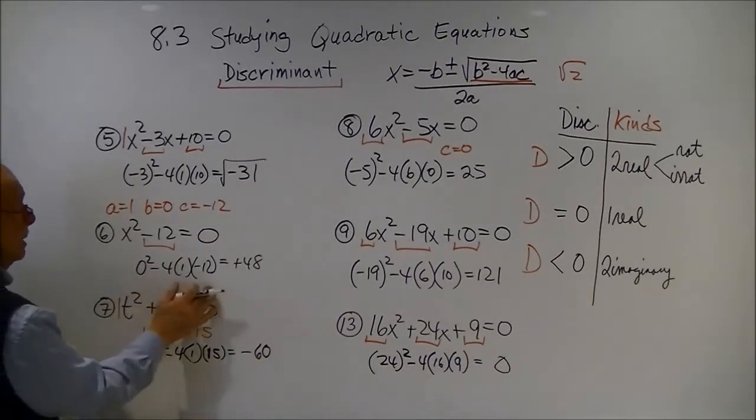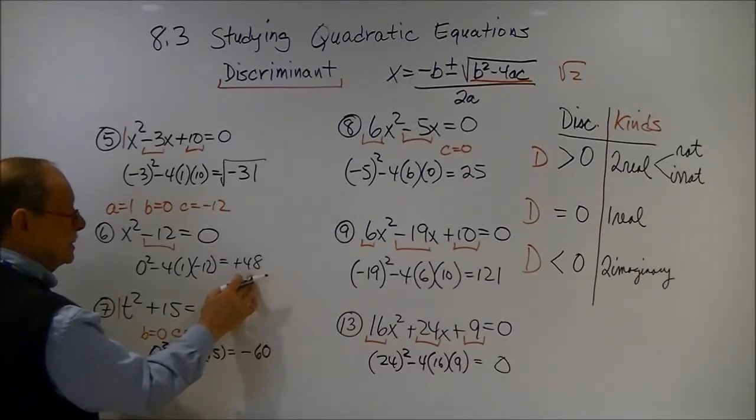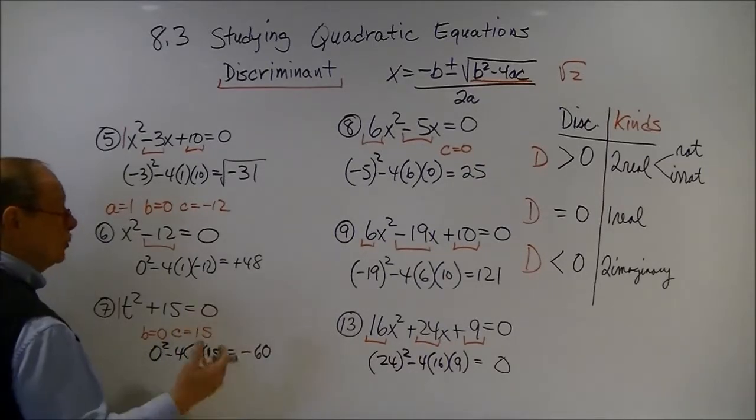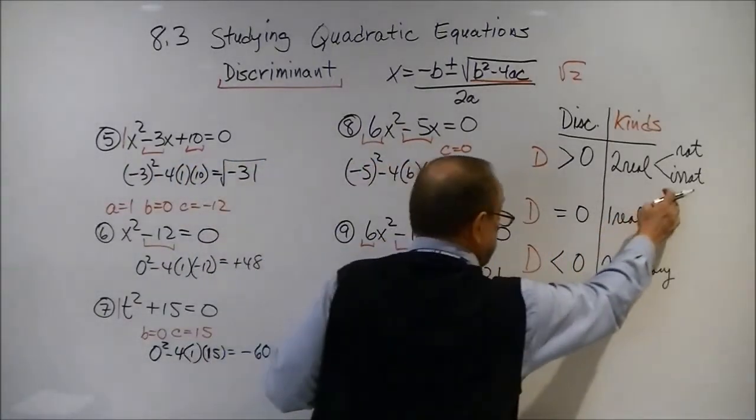When I plugged it here, I got a positive 48. This is not a perfect square, so I'm going to get two real solutions that are going to be irrational.